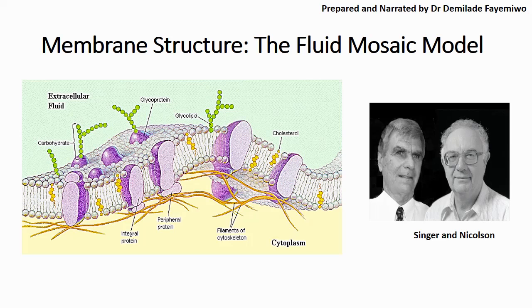You can see in the cell membrane that it is made up of phospholipids as well as additional components such as carbohydrates. You have things called glycoproteins and even cholesterol. Here's a fun fact I usually share with my students: if you don't eat enough cholesterol, your body will make it. Cholesterol is an important part of your cell membrane, and you will see why as we go along.